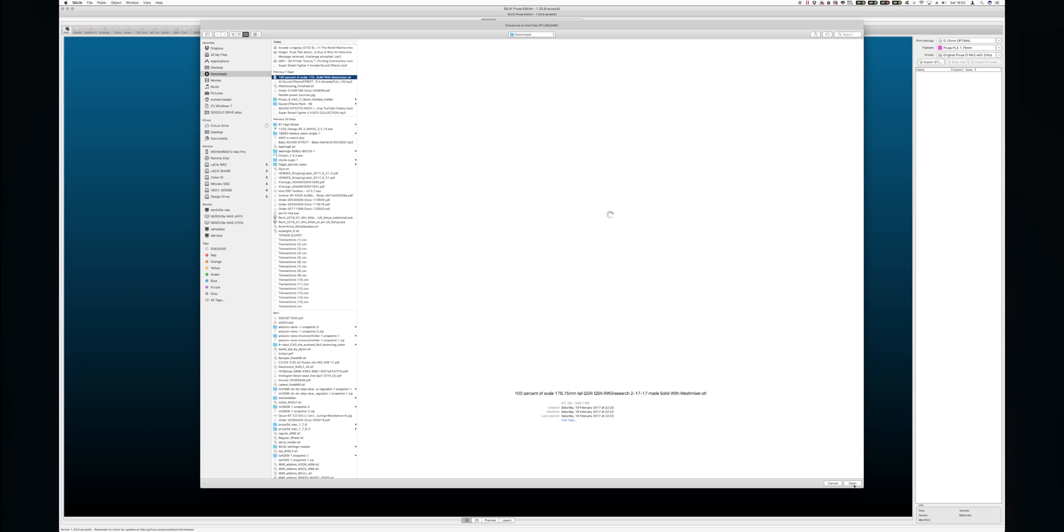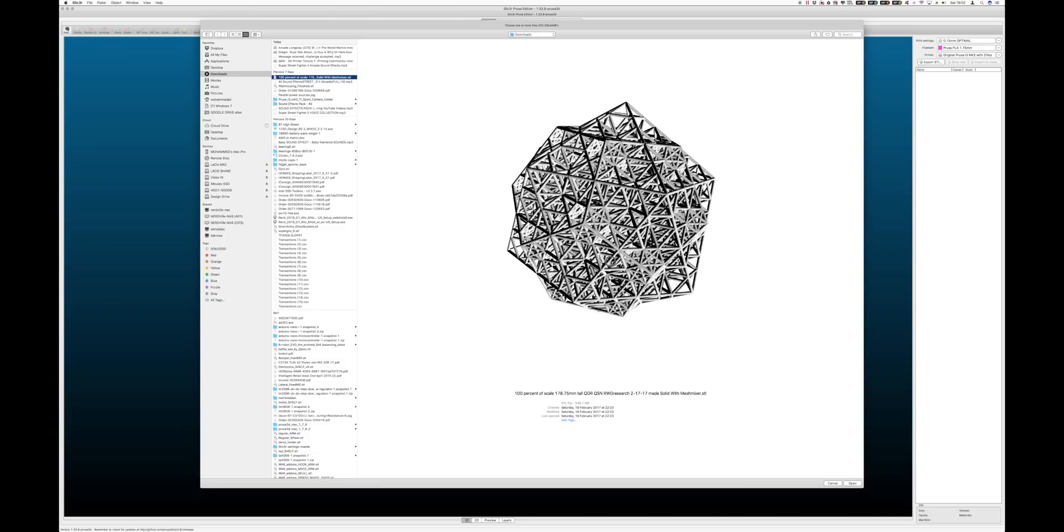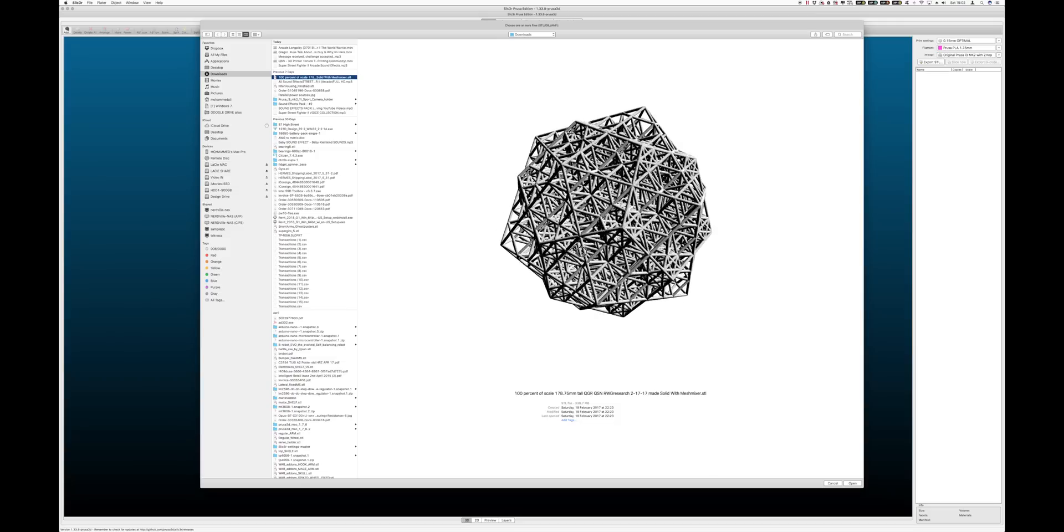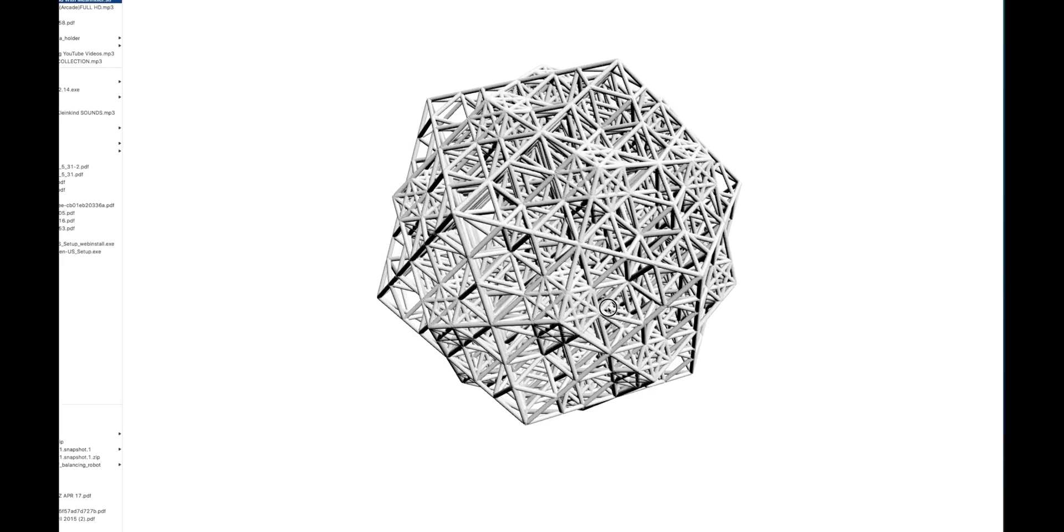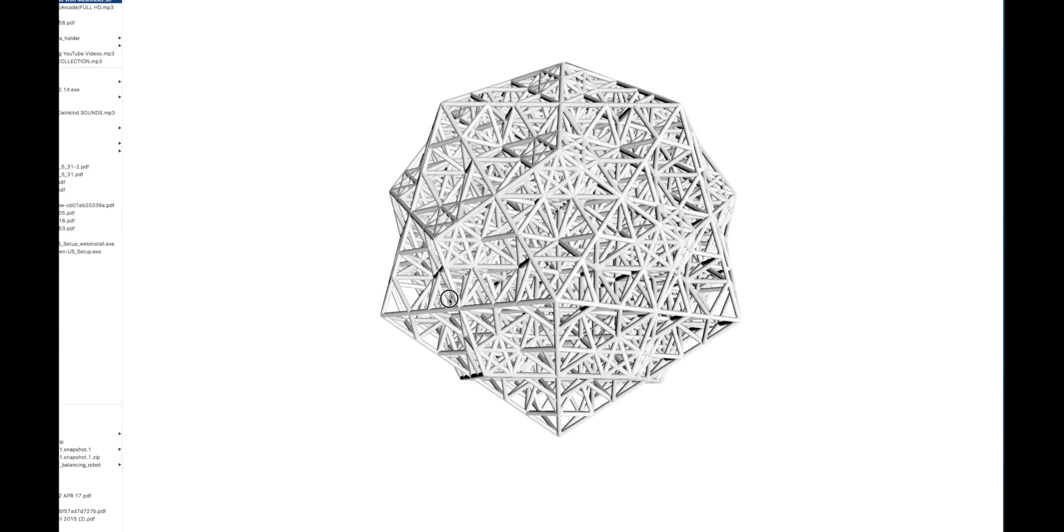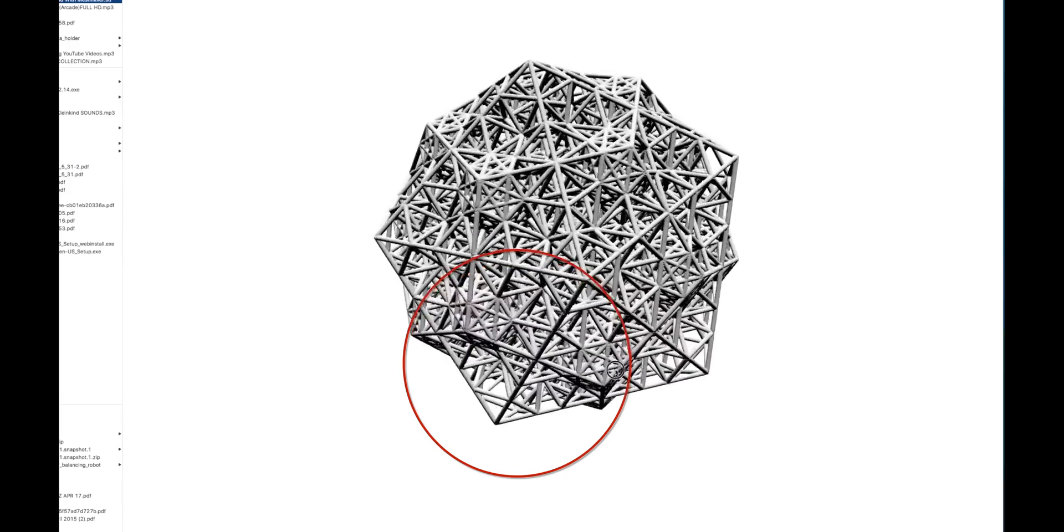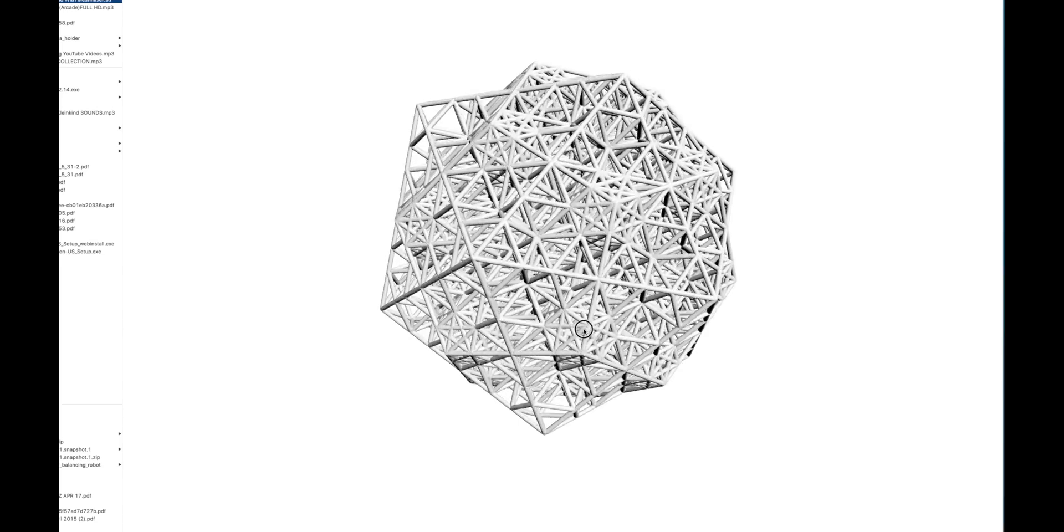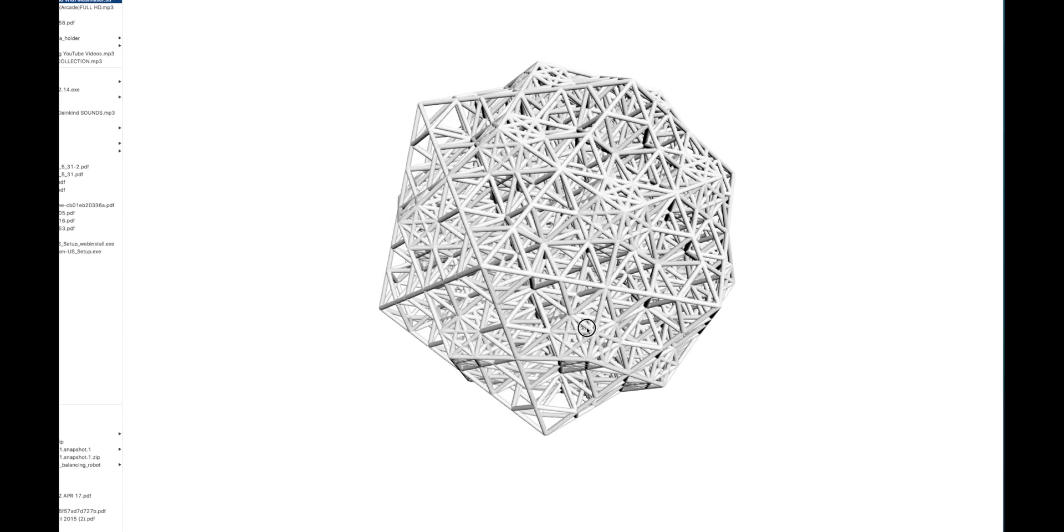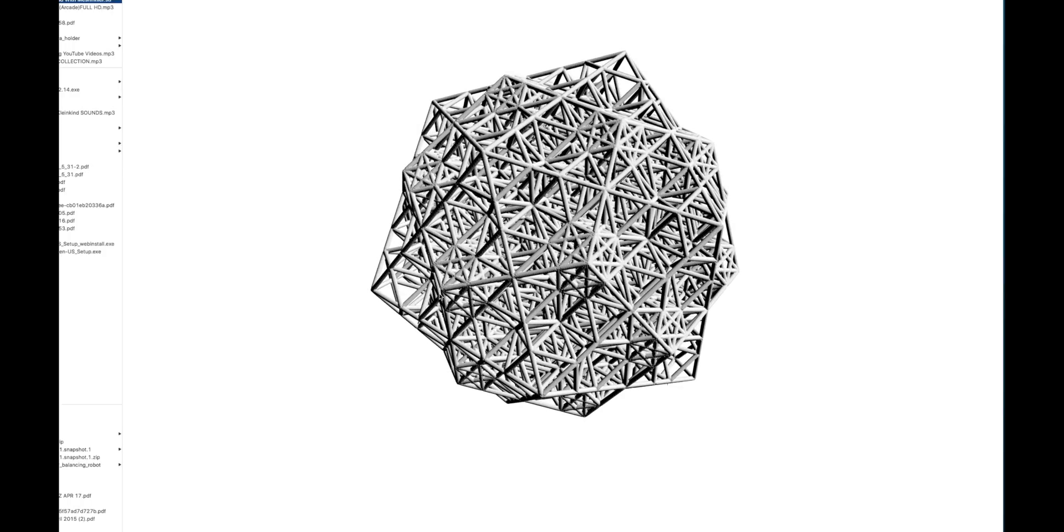Before I even begin to import this into Slicer, I just want to look at the model using the supplied 3D viewer within Finder and see where I can actually chop this in half or maybe take a section off so it lays flat and that we don't need to have supports. And I can see already, if we take that peek out here, that would probably be the best place for us to have the largest point of contact. The larger the footprint, the more chance it has of actually sticking to the bed.